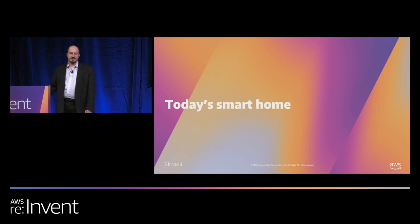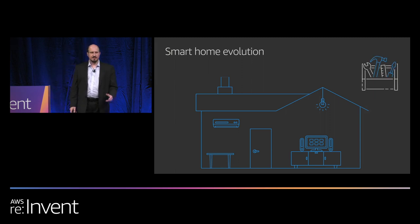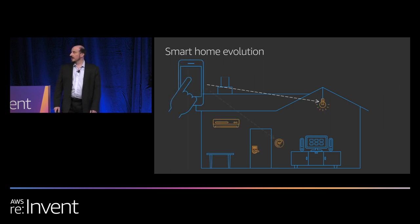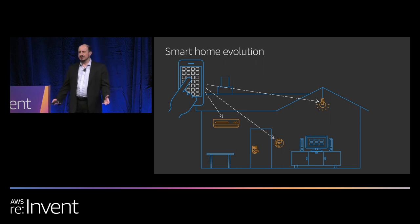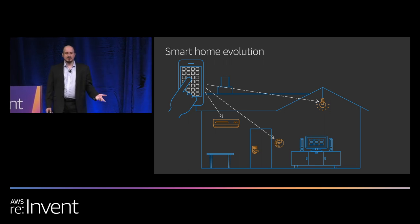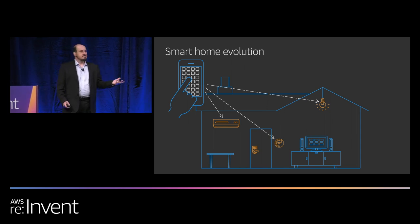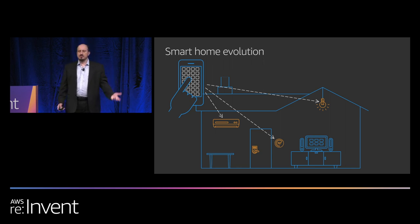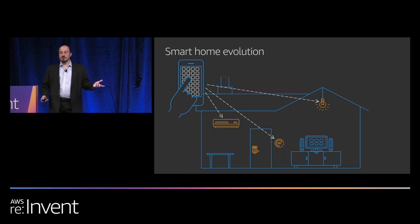Smart home is not a new idea. It's been around for decades, but until fairly recently it has been mostly limited to professionally installed and professionally managed home systems. At the dawn of the modern smart home age, a smart device was likely connected to your smartphone and controlled by an app. But the experience was fragmented — if you had 10 different smart devices, you likely had 10 different apps with different setup experiences and different ways to control them. That posed a very high bar for smart home adoption.